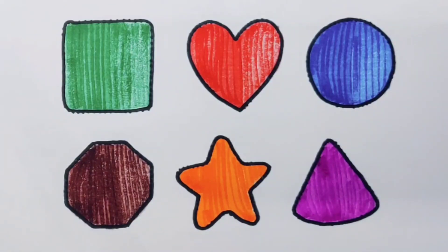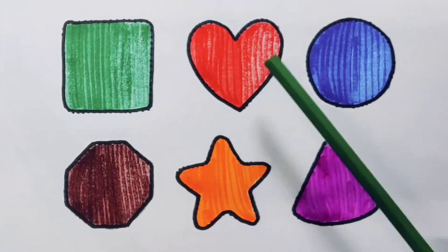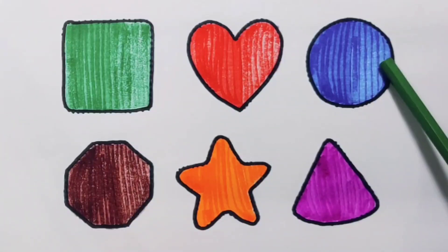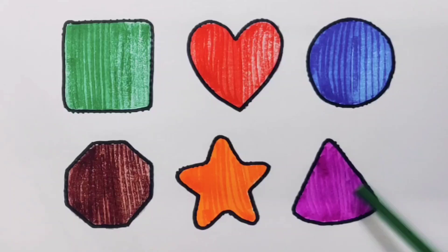What we learned: we learned green color Square, red color Heart, blue color Circle, chocolate color Decagon, orange color Star, pink color Triangle.